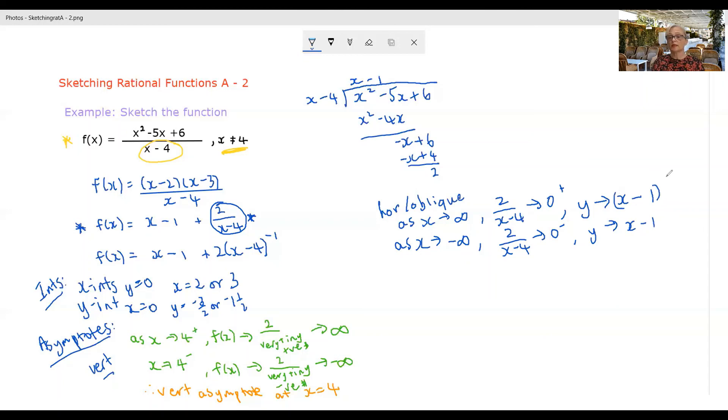So in this case it will be tending from above, this case it will be coming in from below. Again, let me just draw a little sketch to show you what's happening. If we have the line y equals x minus one.